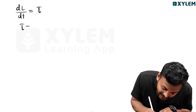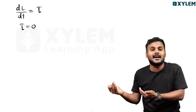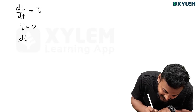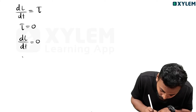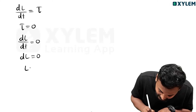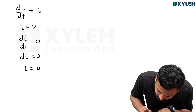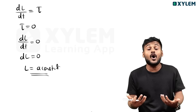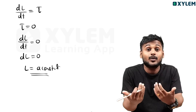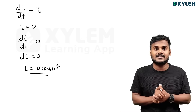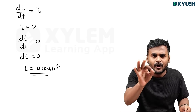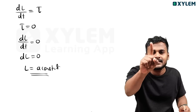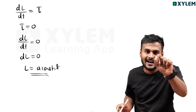If external torque is equal to zero, then the rate of change of angular momentum is equal to zero. Therefore dL = 0, which means L equals a constant. So when external torque is zero, angular momentum is constant.